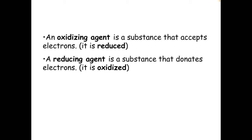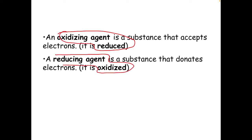A reducing agent is something that donates electrons, gives electrons away, or loses electrons. That means it must be oxidised. So: an oxidising agent must be reduced, and a reducing agent must be oxidised. It's the opposite of what it says it's doing. If it's an oxidising agent, then it itself has been reduced because it's oxidising something else.